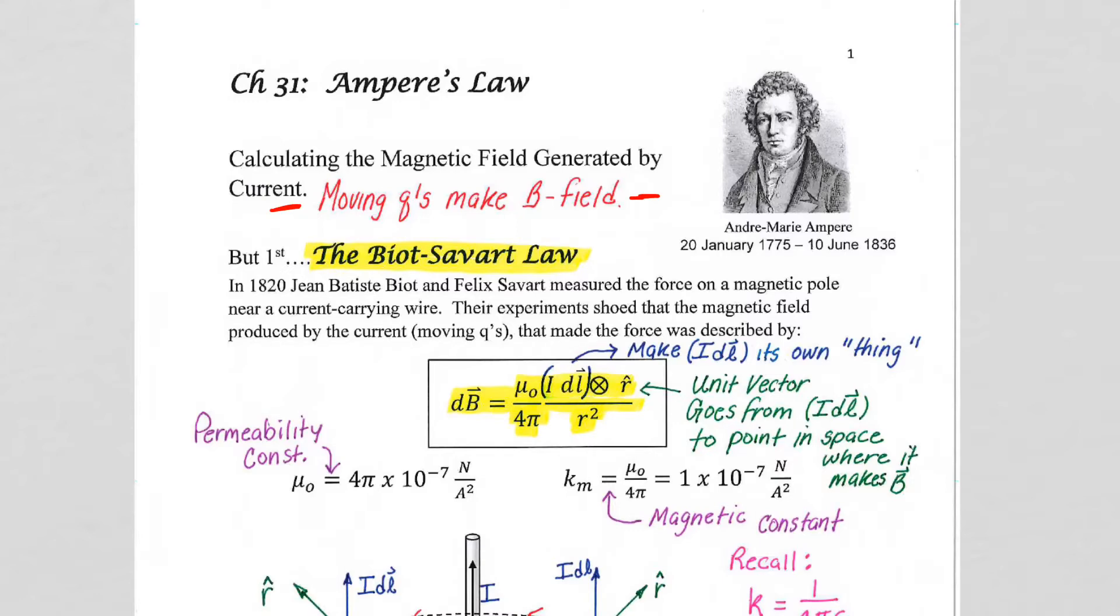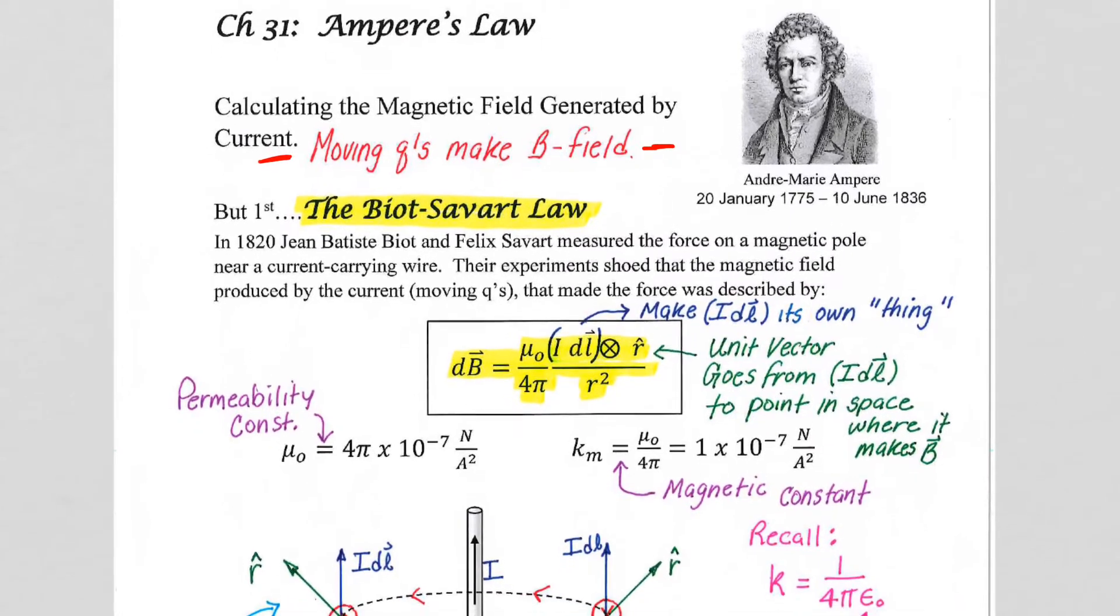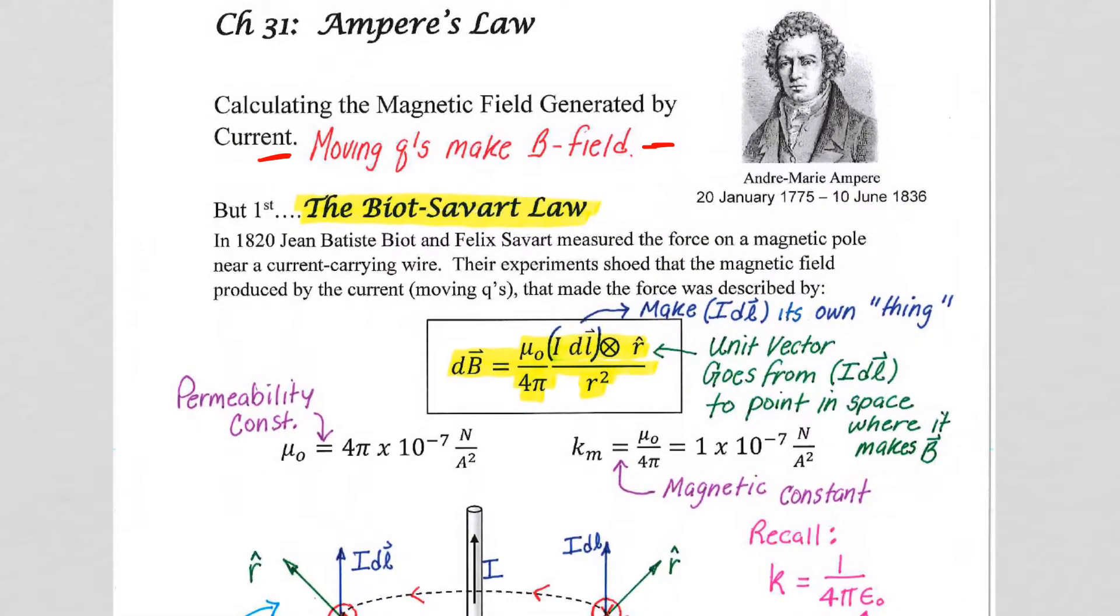And we're going to see the equation that Biot-Savart gave us to calculate the B field that is made from moving charge, namely current I. So we're going to look at the Biot-Savart equation highlighted here in a moment.